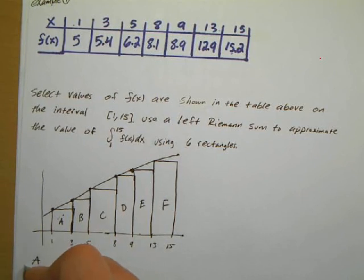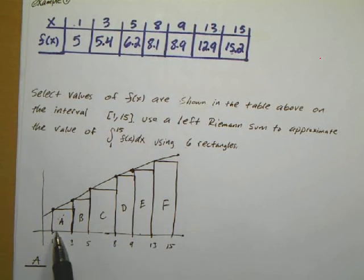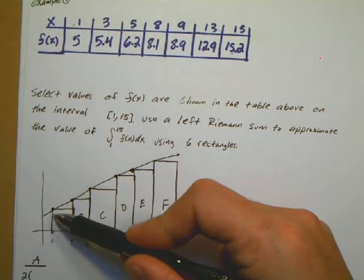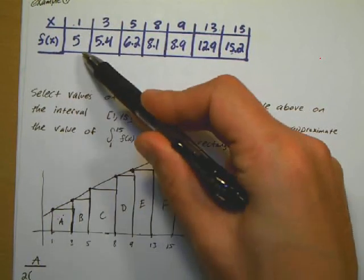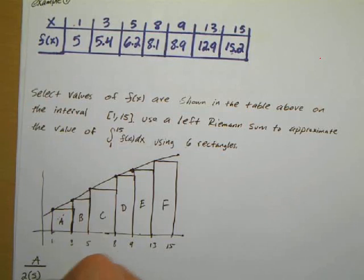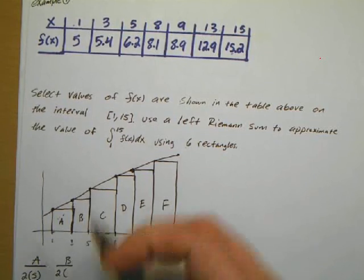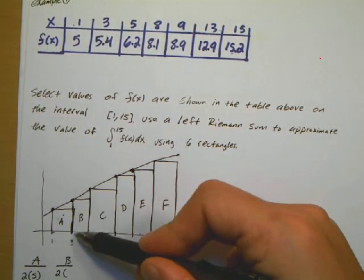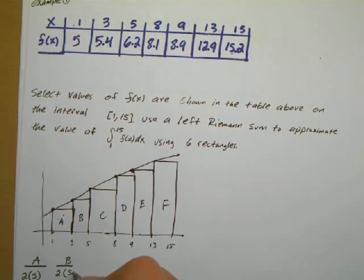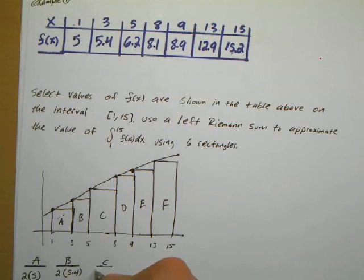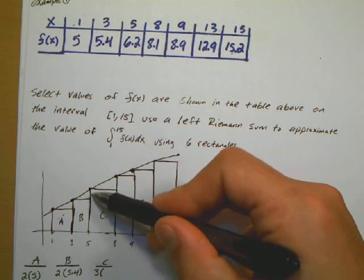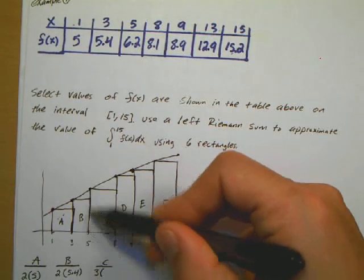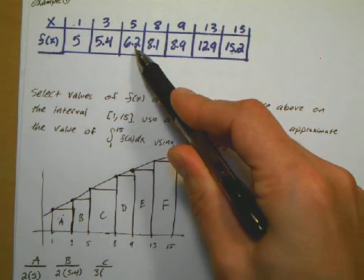For rectangle A, the width is 2 and the height is the function's value at 1, which is 5, so it's 2 × 5. For rectangle B, the width is 2 and the value is the function's value at 3, which is 5.4. For rectangle C, the width is 3 — they don't have to be evenly spaced — and the height is the function's value at 5, which is 6.2.